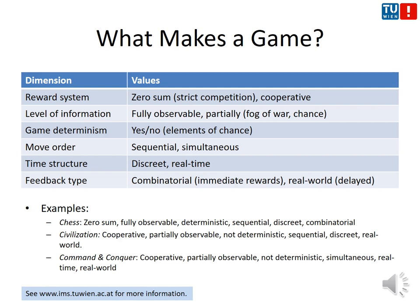Time structure can be discrete or real-time, closely linked to move order — sequential games will almost certainly be discrete, and simultaneous games will mostly be real-time. Feedback type is either combinatorial, meaning immediate reward, or real-world where it is delayed. Almost all interesting games are real-world games, even tic-tac-toe. Chess is zero-sum, fully observable, deterministic, sequential, discrete, and a real-world game. Civilization is cooperative, partially observable, non-deterministic, and sequential. Command and Conquer is a typical real-time game.